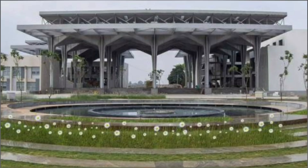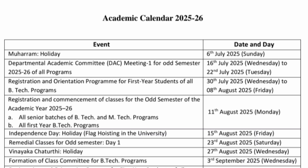This is Presidency University based out of Bangalore. You can see the complete academic calendar 25-26 is there. The first activity is the registration and orientation program for first year students, all B.Tech programs. It started from 30th July 2025 and is going up to 8th August. Students can do registration and the orientation program is happening.